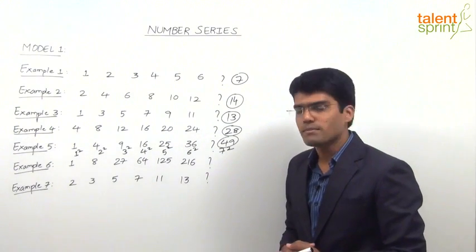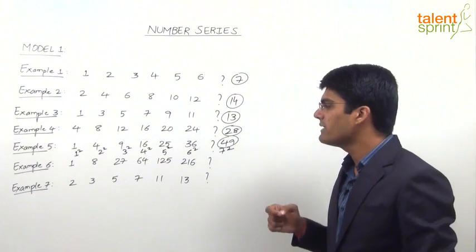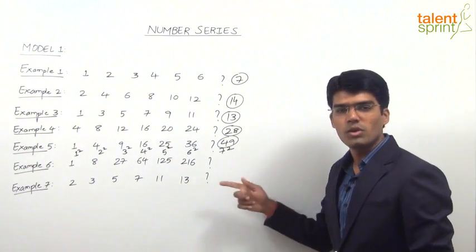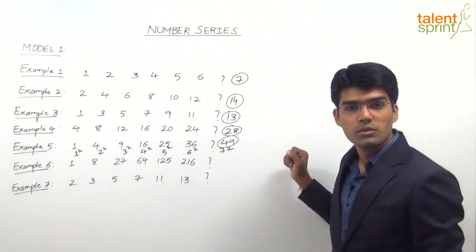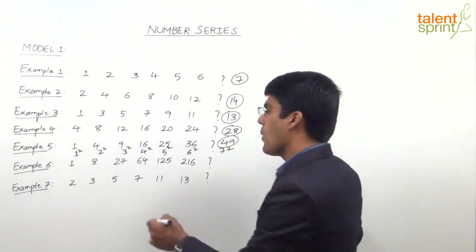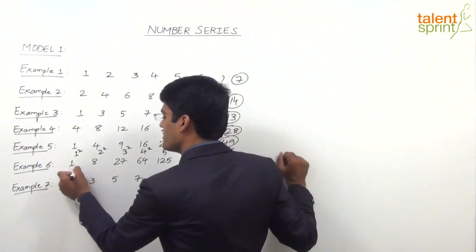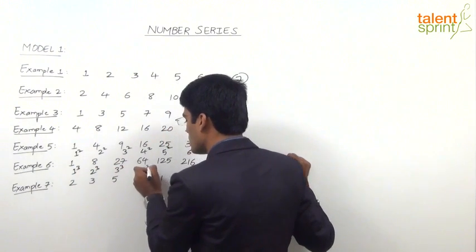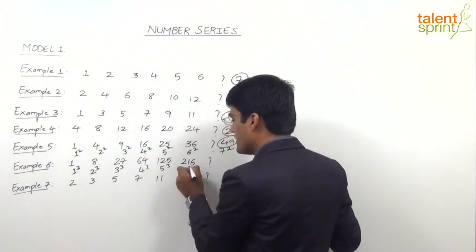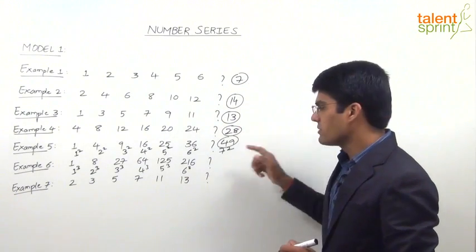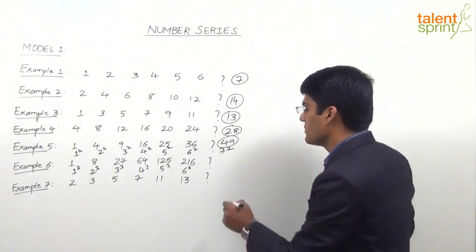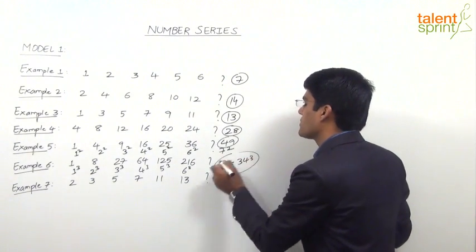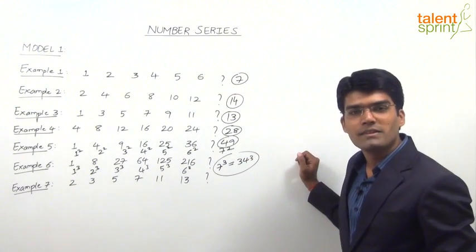In example 6, the series is 1, 8, 27, 64, 125, 216. These are all perfect cubes of natural numbers: 1³, 2³, 3³, 4³, 5³, and 216 is 6³. So it is obvious that the next one has to be 7³, which is 343. The question mark should be replaced with 343.